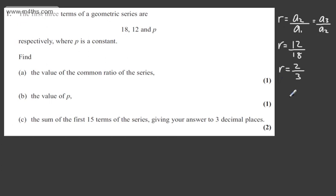In part B we need to find the value of p, so we can say now that the third term divided by the second term, which will be p over 12, will be equal to the common ratio of 2 thirds. Multiplying both sides by 12, we will have 24 over 3 is equal to p, so p is equal to 8. So two marks for part A and B.